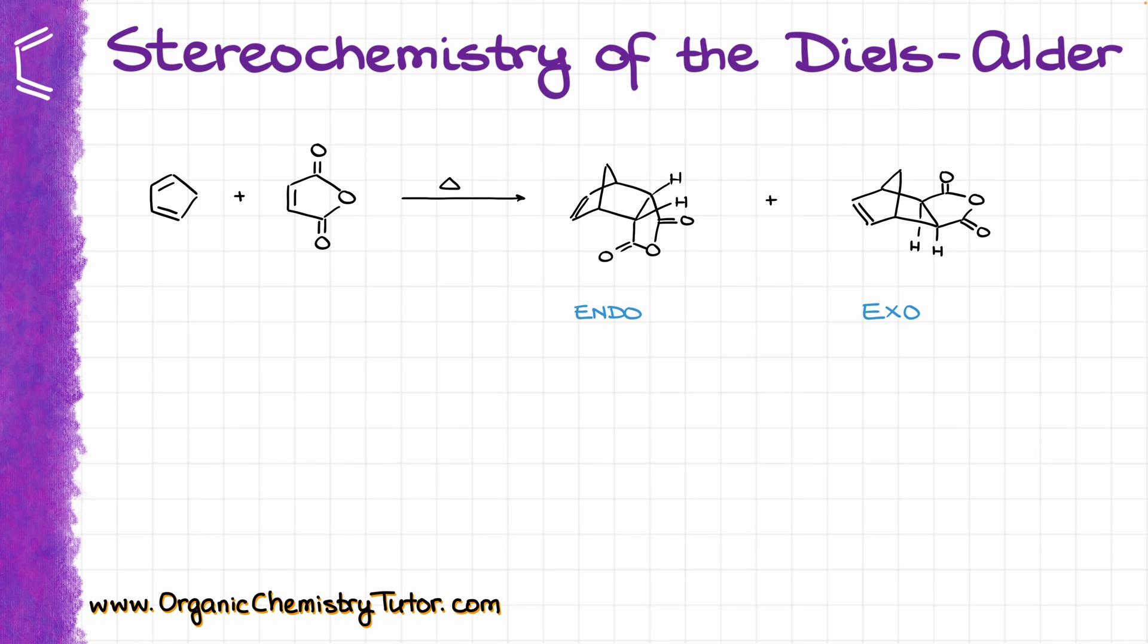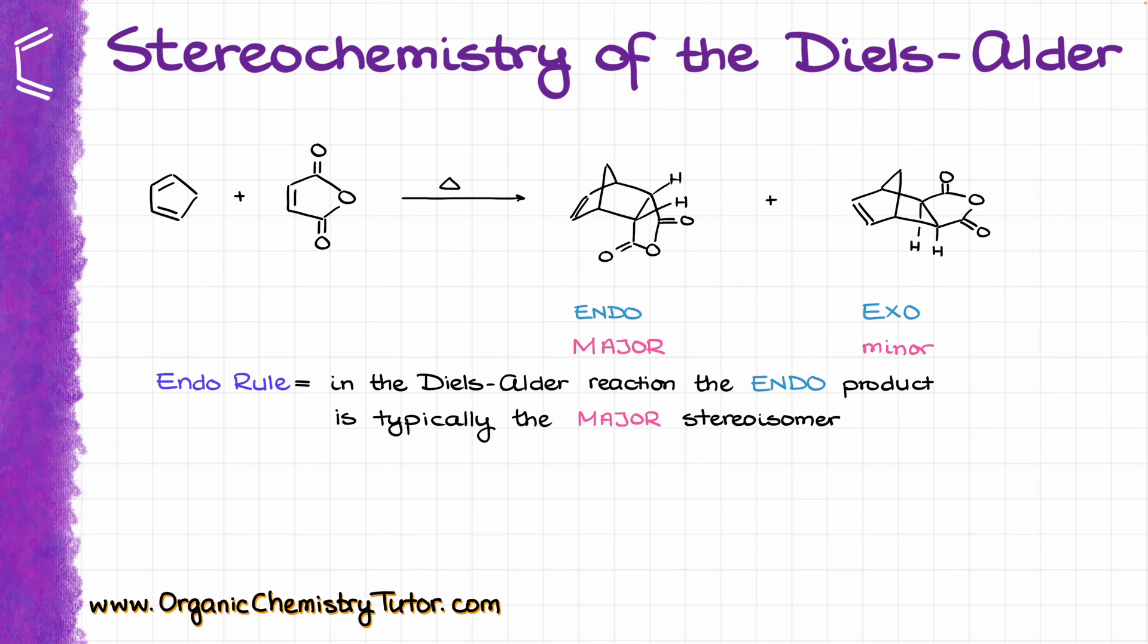In terms of nomenclature, the exo product is where our electron-withdrawing groups are further away from the bridge with the double bond, and the endo product is where they're closer to the bridge. The endo product in the Diels-Alder reaction is typically the major product, and this is known as the endo rule.